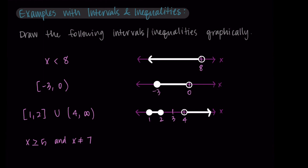Our last example: x is greater than or equal to five and x is not equal to seven. Starting with five — since we're including that point I use a filled-in circle — then a solid line going to the right since x is greater than or equal to five. Then to handle x is not equal to seven, I take the point at seven and remove it using an open circle, which means we've removed just seven while all other points remain.